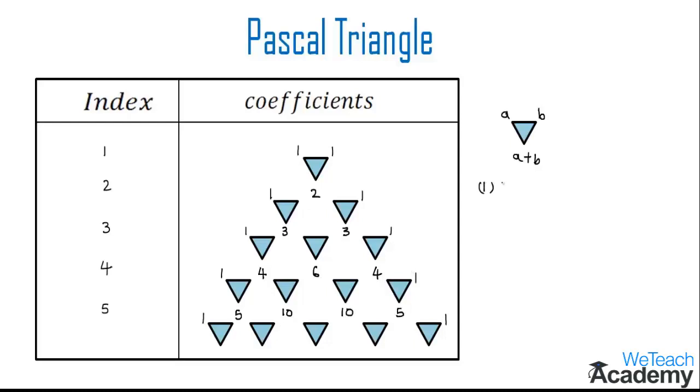So here in this Pascal triangle, we observe that each row begins and ends with one. And the nth row, which is nothing but the first column, is nothing but n plus one for all n belongs to the positive integers. So this arrangement is called as a Pascal triangle.